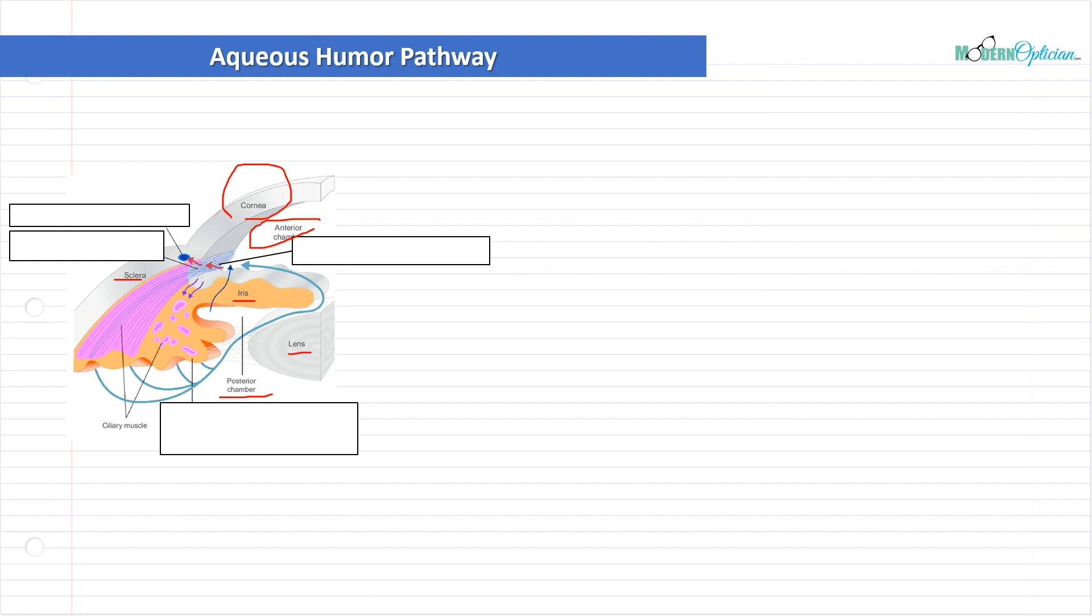Remember, the anterior chamber is posterior to the cornea, anterior to the iris. It's that area that's wedged between the back of the cornea and the front of the iris. And the posterior chamber is the small area behind the iris, in front of the lens. This is going to be an important concept to keep in mind.